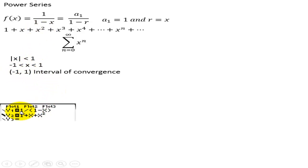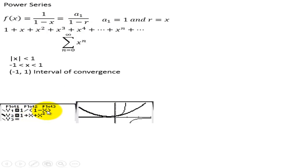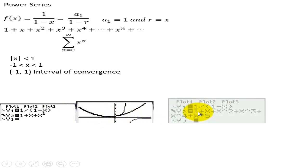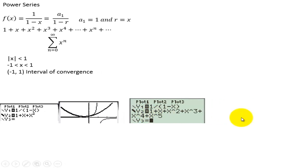Graphically, if we graph the power function and then graph a piece of its polynomial estimate — this polynomial estimates the value of this function. When we graph the original function, we get a curve that goes along the x-axis and then curves up. The estimate is a good estimate as long as we're between negative 1 and 1. We can add more terms to the estimate, but it will still fail outside of negative 1 to 1. Even with more terms added, it remains good only from negative 1 to 1.